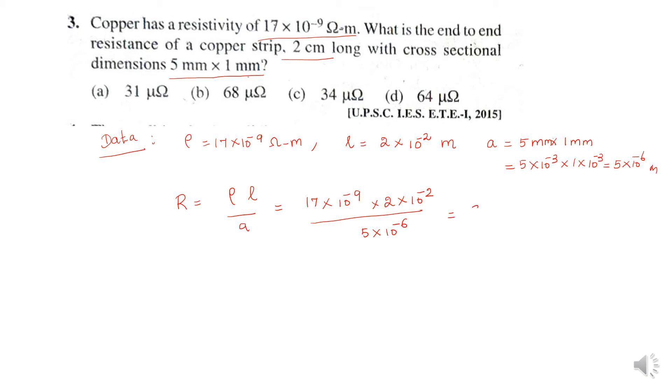Here I have to reduce this: 34 divided by 5 into 10 power minus 11 plus 6. So 34 divided by 5 into 10 power minus 5. We get 6.8. Now I have to multiply both numerator and denominator by 10. The answer is 68 into 10 power minus 6 or 68 micrometer.